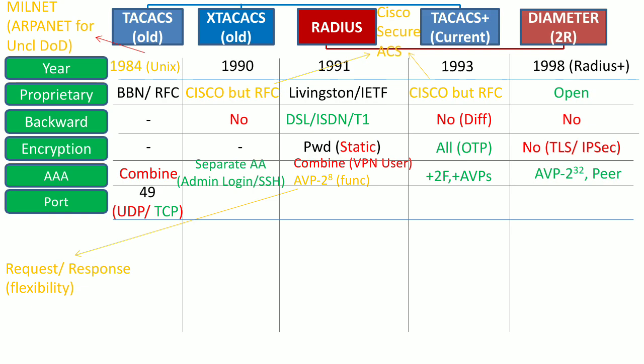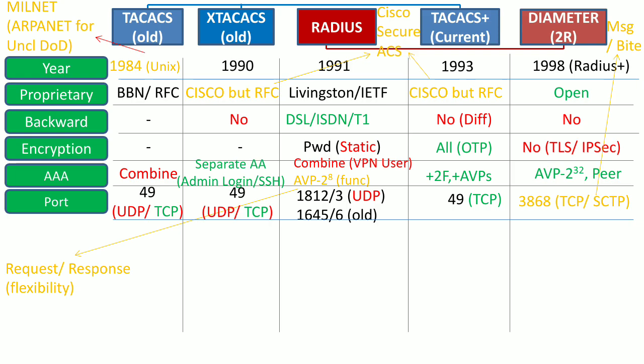TACACS uses port 49 for both TCP and UDP, and XTACACS also uses the same ports. RADIUS earlier used port 1645 for authentication and 1646 for authorization — these were non-official ports — but now it uses 1812 for authentication and 1813 for authorization. One drawback is that RADIUS only uses UDP, not TCP, so there is not as much reliability as TACACS or Diameter. TACACS+ uses port 49 TCP, so it is more reliable than RADIUS. Diameter also uses TCP and Stream Control Transmission Protocol, both of which are more reliable than UDP.